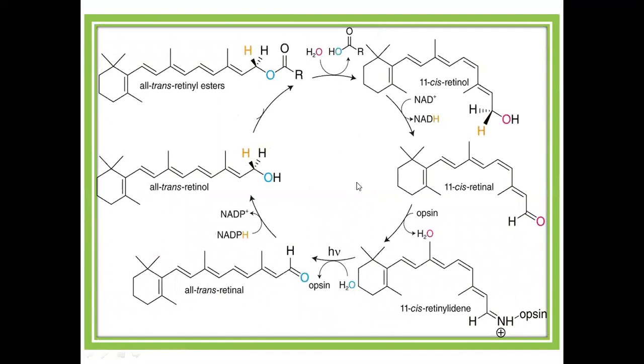Now let's go to the visual cycle. This is a cyclic process, and we have to start somewhere, so I think the best point is to start with the rhodopsin molecule. Rhodopsin is a photosensitive molecule which consists of the protein opsin and 11-cis retinal.